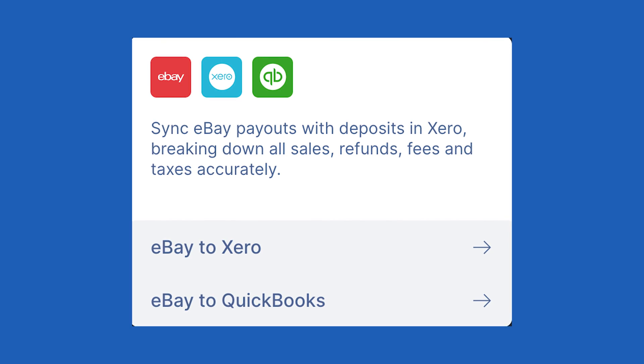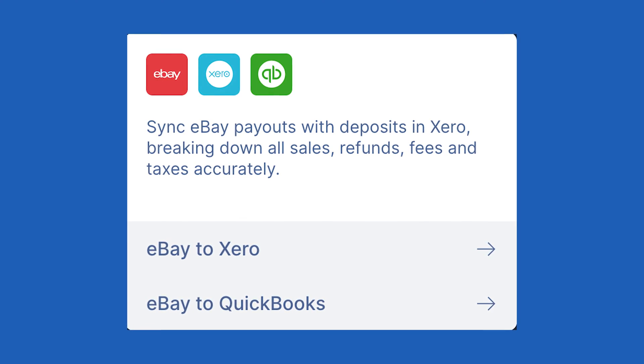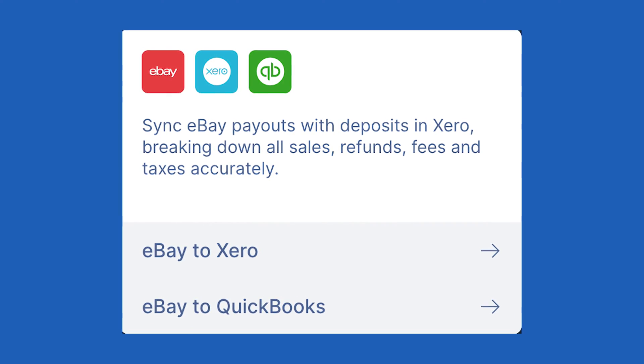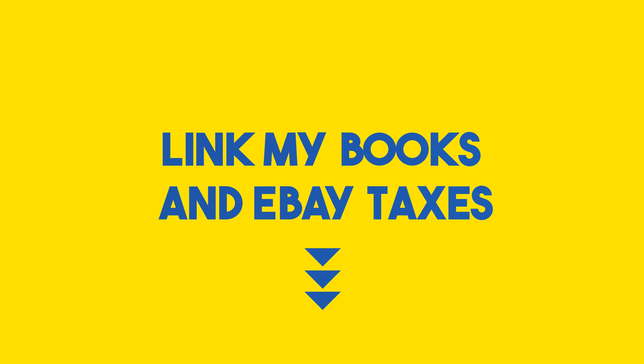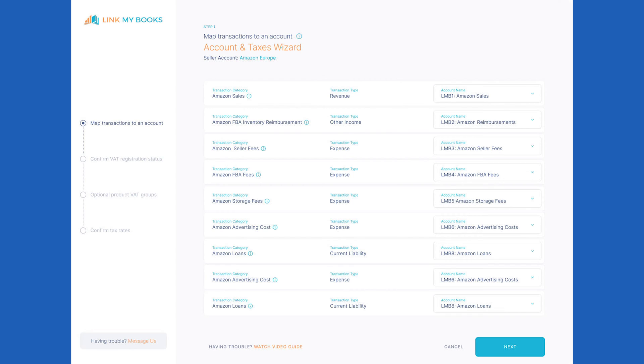LinkMyBooks hooks up directly to your eBay accounts and major accounting software like Xero or QuickBooks — automation is the name of the game, and all your sales data syncs seamlessly. Now, let's talk about everyone's favorite topic: taxes. Accuracy is key, and LinkMyBooks has your back — no more nightmares about underpaying or overpaying. It calculates taxes automatically for every sale, like having a personal tax wizard at your service.